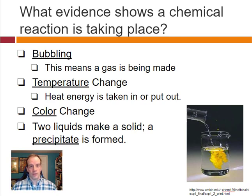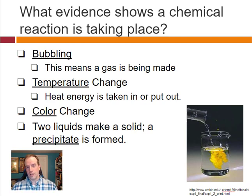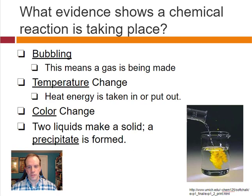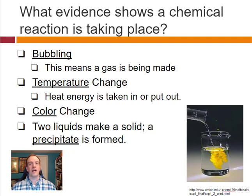If we mix things together and get a temperature change — things getting colder or heating up — that could be evidence of a chemical reaction. There might also be a color change, like in the picture shown here, which is also an example of a precipitate — where two liquids come together and we get a solid.